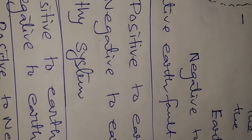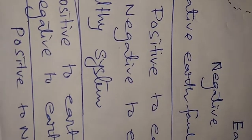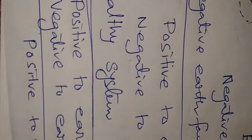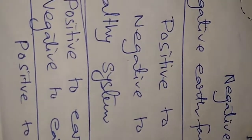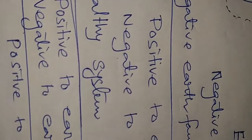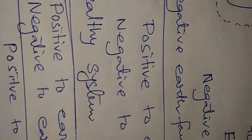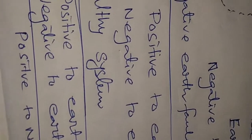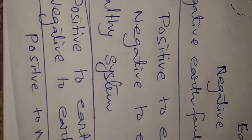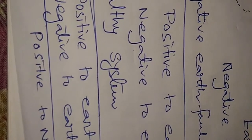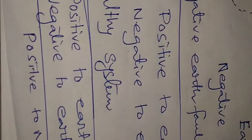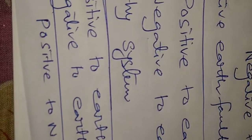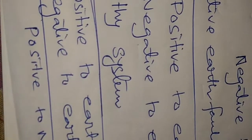When there is no earth fault present, if the DC bus voltage is 110V DC, you should measure positive to earth as 55V, negative to earth as 55V, and positive to negative as 110V. In that case, you can be 100 percent sure your system has no earth fault — neither positive nor negative. This is the healthy condition of the system.